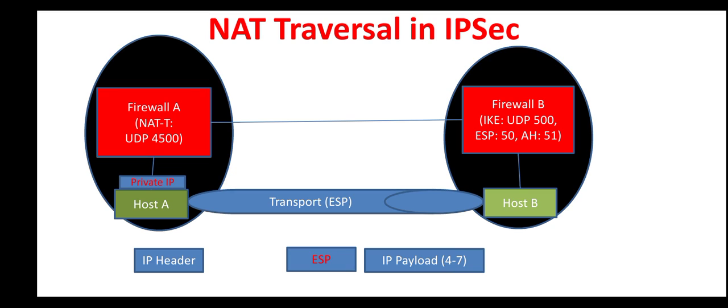Once this IPsec packet reaches firewall A, firewall A performs NAT traversal by inserting a UDP wrapper over the ESP header. This UDP wrapper is unencrypted, so it can be changed by the NAT device, meaning there is no change to the primary IP payload — only the UDP wrapper gets changed. This UDP wrapper uses UDP port 4500, which indicates to the other firewall that this IPsec packet is using the UDP wrapper for NAT purposes.